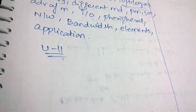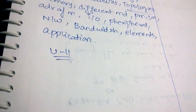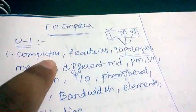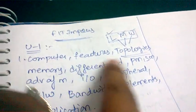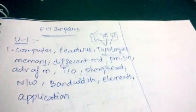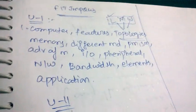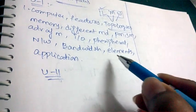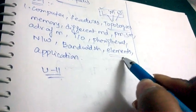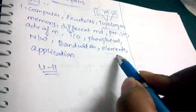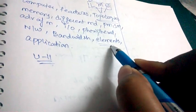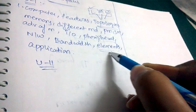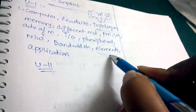Coming back to Unit 1, the common definition they ask every year is about the computer — this is very very important. Features are also important, as well as topologies. Don't skip those answers; they are very scoring. If they ask you to write about elements of a computer, it's always better to draw a neat diagram which explains the elements of a computer.